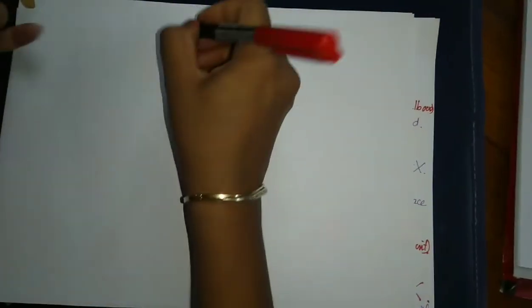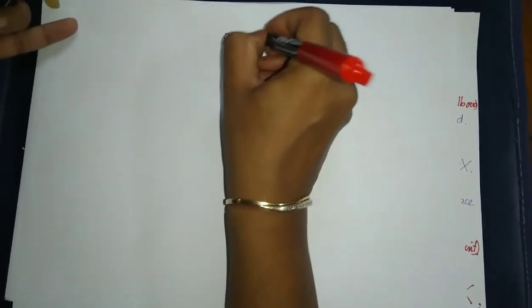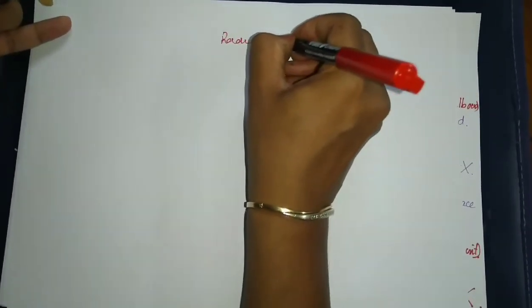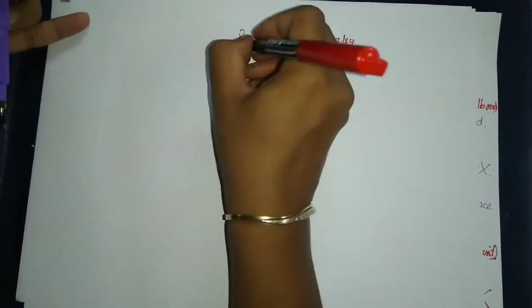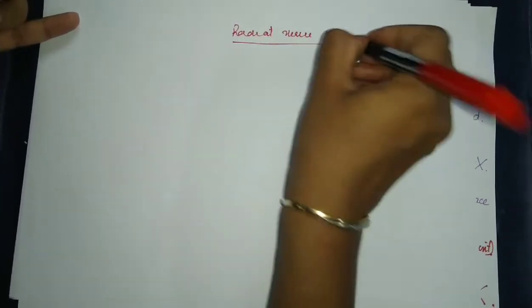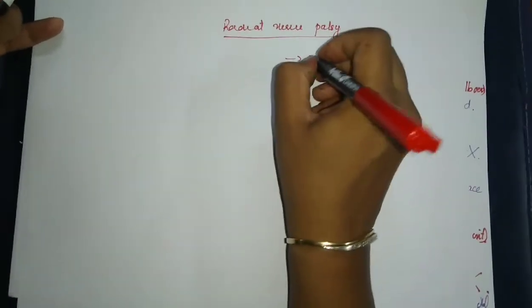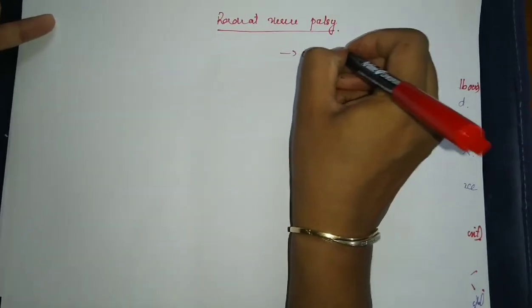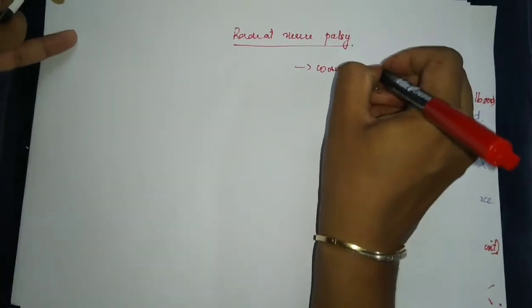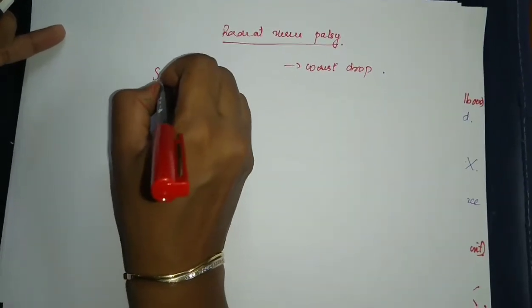In general radial nerve palsy, the characteristic deformity is known as wrist drop. There is also an entity known as Saturday night palsy.